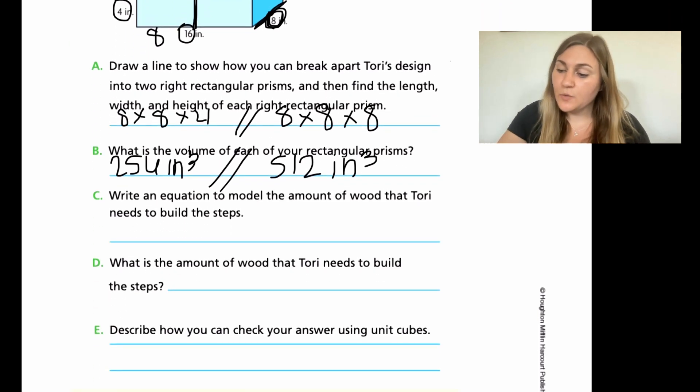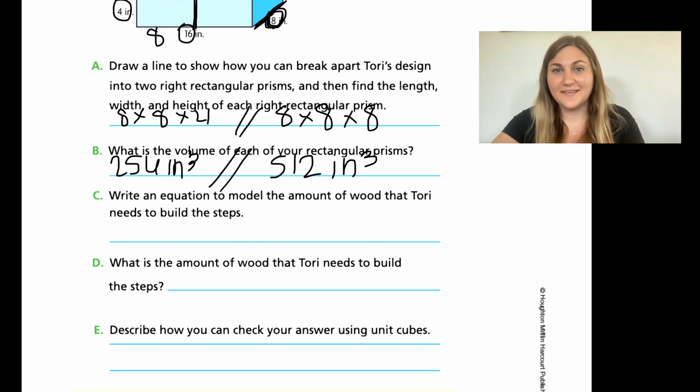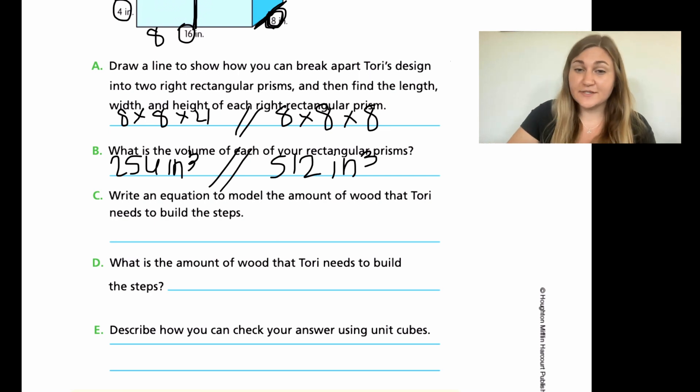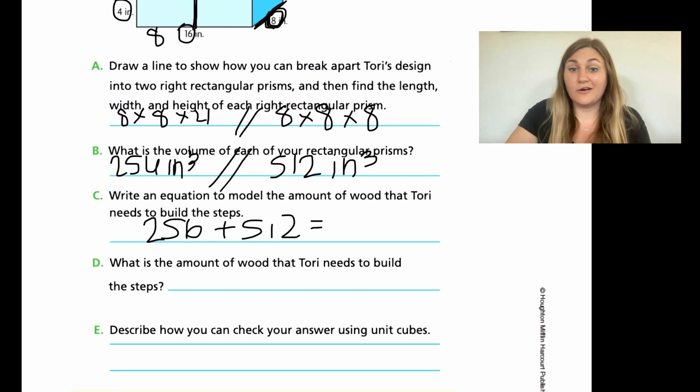Now let's try C. So write an equation to model the amount of wood that Tori needs to build the steps. So what this needs is you're looking for the total volume now. This is a little bit simpler than it might seem, but you're going to write an equation on how to find the total volume for both. And remember from question number one, when we found our two individuals, how did we find the total for the entire shape? Go ahead and try C here. Coming back. So for C the way to find volume again, it's just adding those two numbers together. So all we're going to do is we're going to take our 256 and we are going to add it to our 512. That would be our equation.